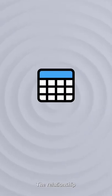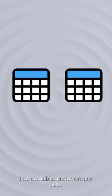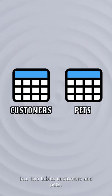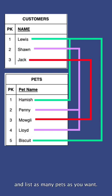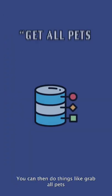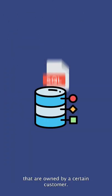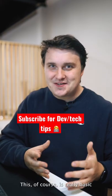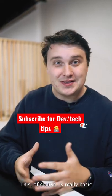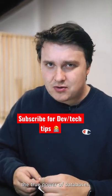The relationship allows you to separate this into two tables, customers and pets. You can then just relate the pet to the customer and list as many pets as you want. You can then do things like grab all pets that are owned by a certain customer. This, of course, is really basic, but shows you the true power of databases.